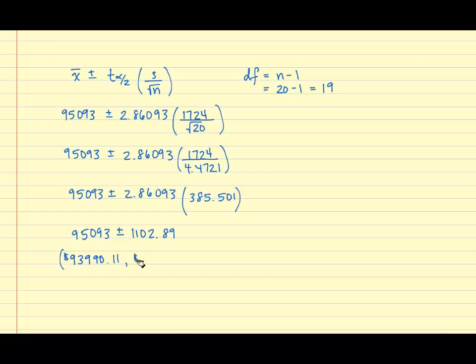And in order to get the upper bound, I'm going to take 95,093 plus 1,102.89. And I get 96,195.89.